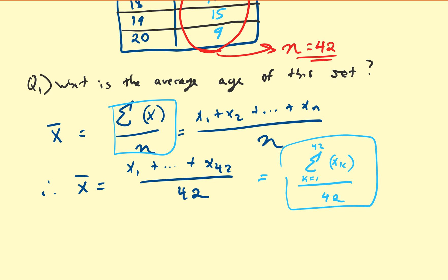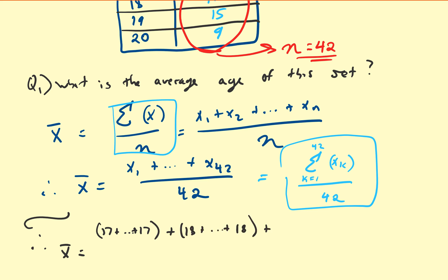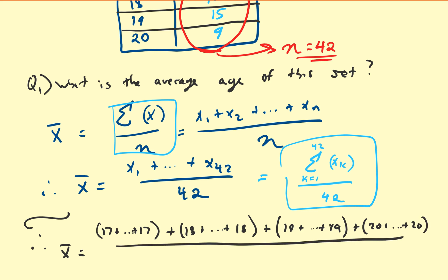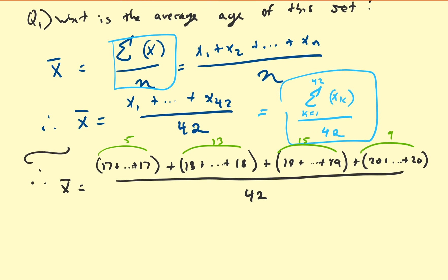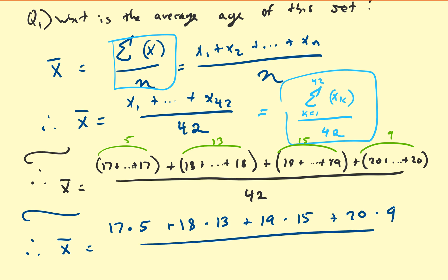There is another way to actually compute this. If we plug in our data values, this is just 17 added 5 times, plus 18 added 13 times, plus 19 added 15 times, and 20 added 9 times, all divided by 42. Using algebraic simplification, we can rewrite this more simply as 17 times 5, plus 18 times 13, plus 19 times 15, plus 20 times 9, all divided by 42.